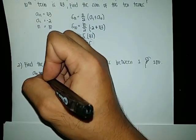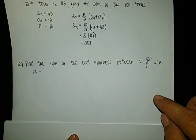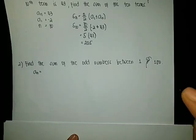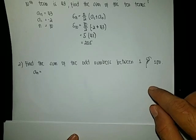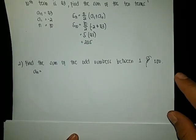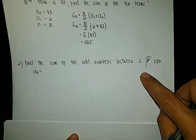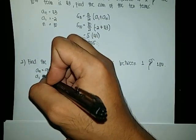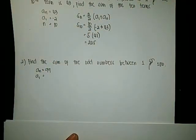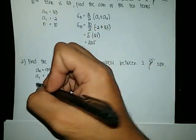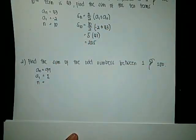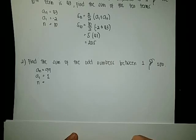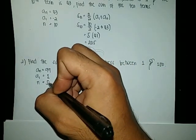Our A sub n, which is our nth term, will be 99 — because 99 is the last odd number between 1 and 100. Our A sub 1, the first term, is 1, which is the first odd number between 1 and 100. And our n, the total number of terms — how many odd numbers do we have from 1 to 100? We have 50. There are 50 odd numbers and also 50 even numbers, so n equals 50.